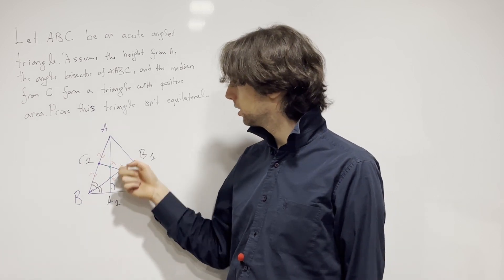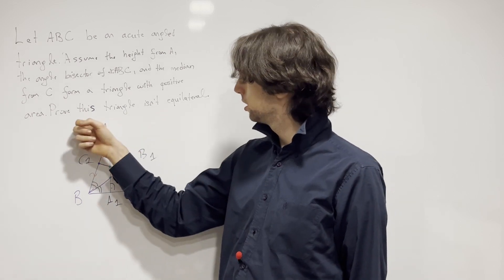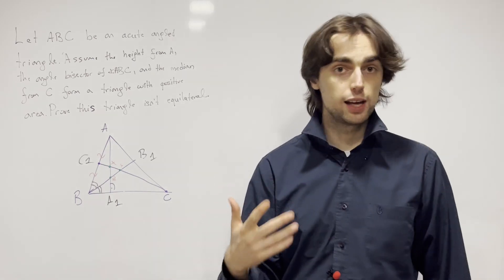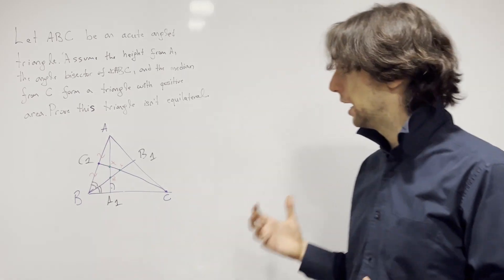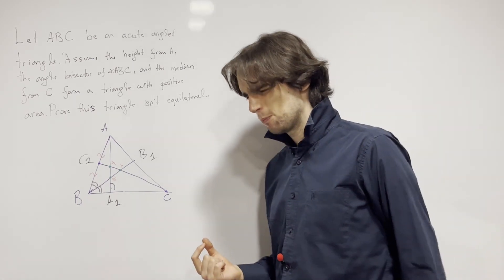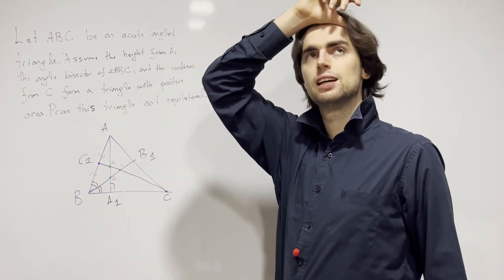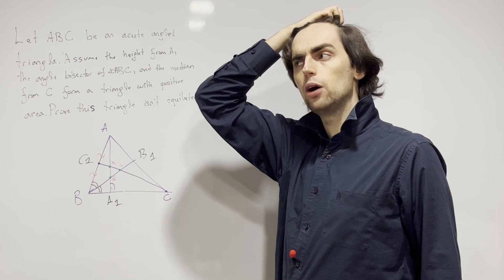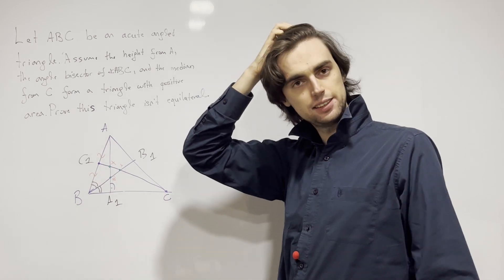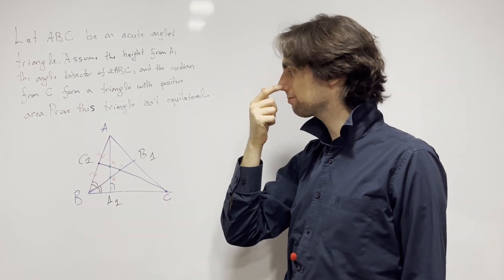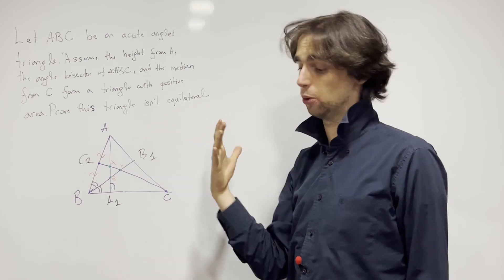So assuming this, prove this triangle isn't equilateral. Now a big question when I saw this problem was: wait, you usually have to prove that something is the case, now how do I prove something is NOT the case? And that's the big question, that's the first question here.